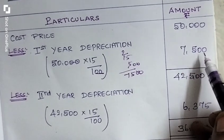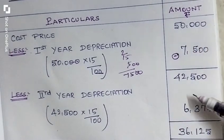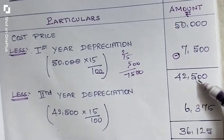This zero is to be added here. So 7,500. We have to subtract the 7,500 from 50,000, we will get 42,500.